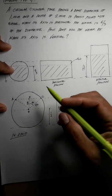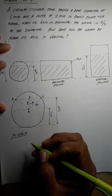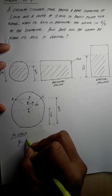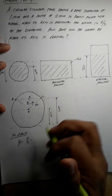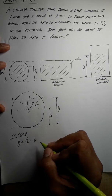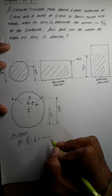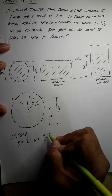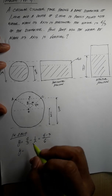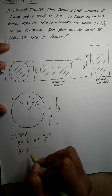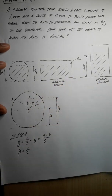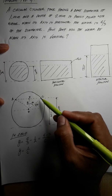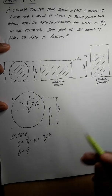To determine Y: Y equals the height of the water, which is two-thirds, minus the radius, which is one-half. So Y equals two-thirds minus one-half, which equals one-sixth. So Y equals one over six.